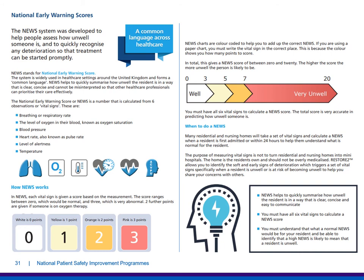Observations are done at different times in different care homes. Many homes will take a set of vital signs and calculate a NEWS score when the resident is first admitted, or within 24 hours, to help understand what is normal for the resident. Other homes take observations on a monthly basis, and there's no reason why you can't use the NEWS score for monthly observations. The purpose of measuring vital signs is not to turn residential and nursing homes into mini hospitals. Restore2 allows you to identify soft signs and early signs of deterioration, which trigger a set of vital signs specifically when a resident is unwell or at risk of becoming unwell, to help you share your concerns with others.